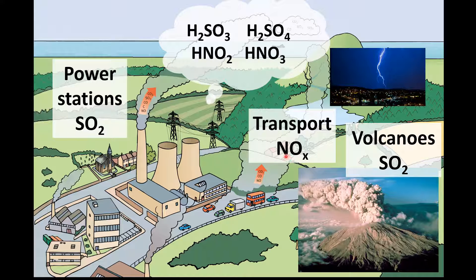The acidic gases produced, such as sulfur dioxide and the oxides of nitrogen, dissolve in water to form acids such as H₂SO₃ which is sulfurous acid, H₂SO₄ which is sulfuric acid, HNO₂ which is nitrous acid, and HNO₃ which is nitric acid.